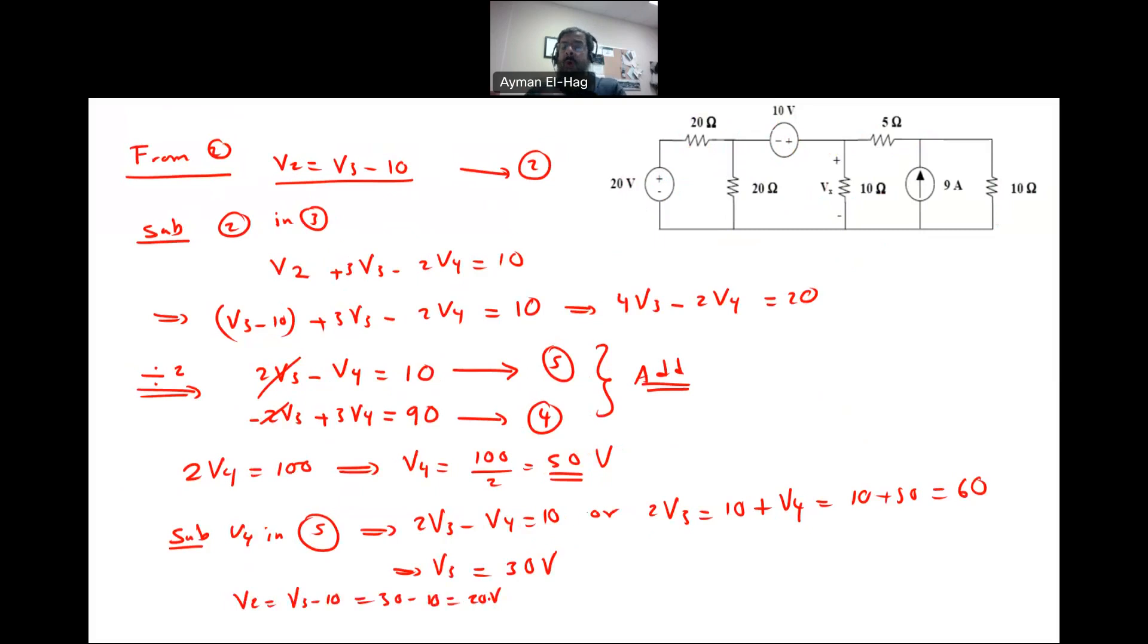So now we found all node voltages. Now what is the requirement in the question? We need to find VX. Basically VX is the voltage between this point and this point. This is my reference, V equal to zero, and this is my V3. So your VX is equal to your V3, which is equal to 30, 30 volts.